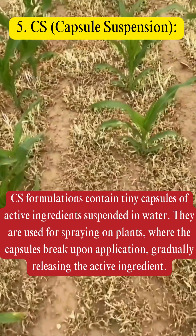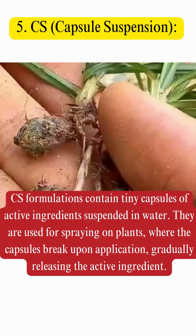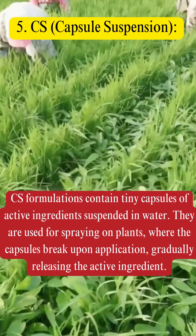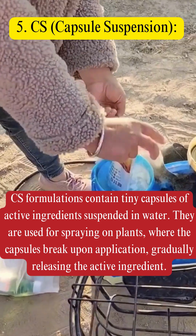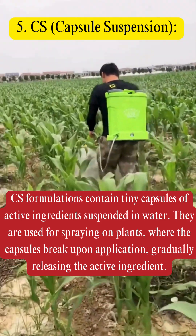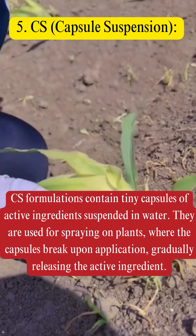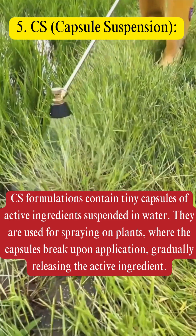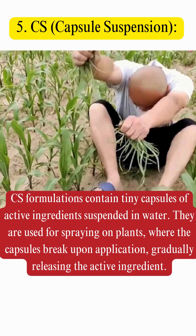5. CS — Capsule Suspension. CS formulations contain tiny capsules of active ingredients suspended in water. They are used for spraying on plants, where the capsules break upon application, gradually releasing the active ingredient.